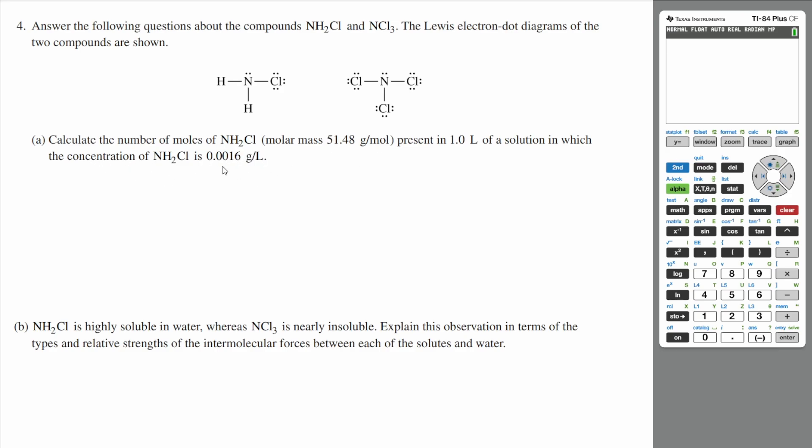So we know our concentration is 0.0016 grams per liter, and we have one liter. So we're going to have 0.0016 grams of NH2Cl. Since we're asked to calculate the number of moles, let's divide this by the molar mass, which is 51.48 grams.